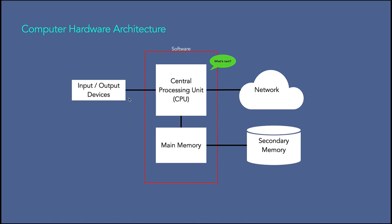The next part is input and output devices — simply our screen, keyboard, mouse, microphone, speaker, touchpad, and all the ways we interact with the computer. Then in modern computers we have another part called network. Most computers have a network connection to retrieve information over a network. We can think of the network as a very slow place to store and retrieve data that might not always be available. In a sense, the network is slower and at times unreliable compared to secondary memory. If you don't have an internet connection, it's not possible to access data stored in the cloud.